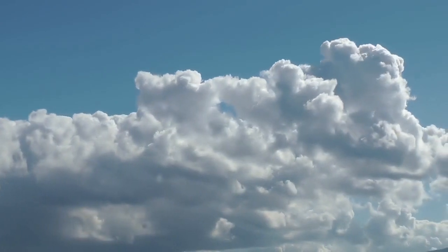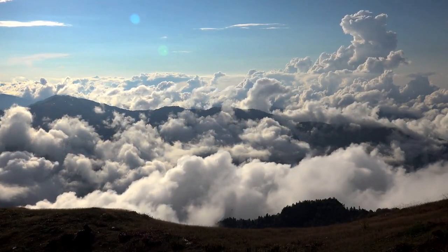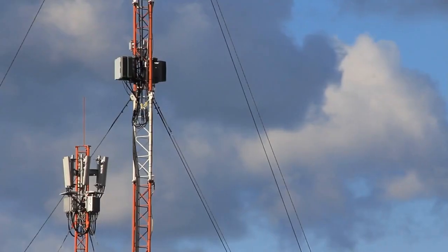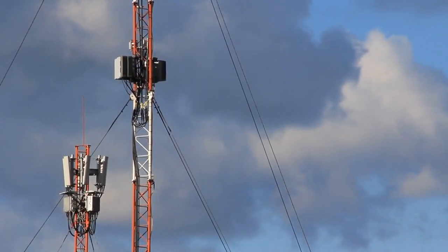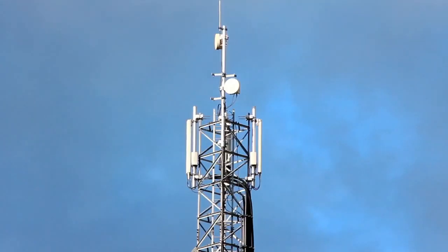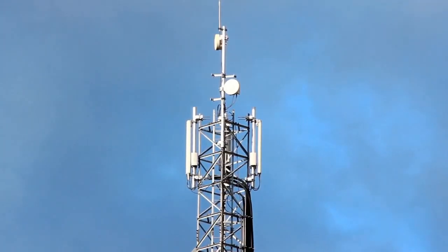Clouds are formed when moist air rises and cools. As the air rises, the water vapor in it condenses into tiny water droplets or ice crystals, forming a cloud. This process is known as condensation. Clouds are created in several ways, including convection. When air near the ground is heated by the sun, it rises and cools, forming clouds. This is called convection and is the most common way clouds are formed.